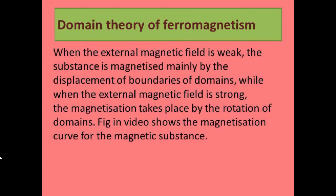When the external magnetic field is weak, the substance is magnetized mainly by the displacement of the boundaries of the domain. When the external magnetic field is very strong, the magnetization is caused by the rotation of the domain. So: weak field → boundary displacement; strong field → domain rotation.